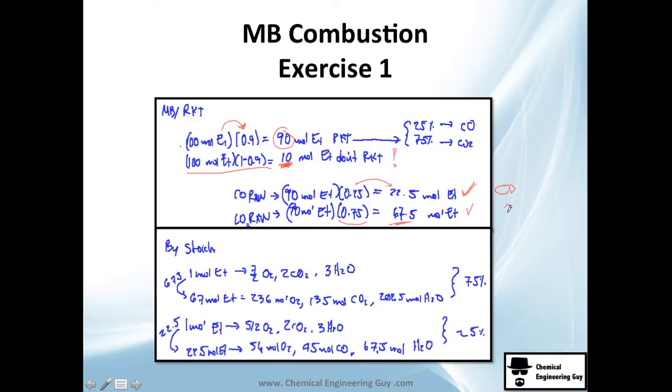By stoichiometry, one mole of ethane when combusting completely gives 7.5 moles of oxygen consumed, 2 moles of CO2, and 3 moles of H2O. Since we have 67.5 moles going to complete combustion, we multiply by 67.5 to get all the CO2 fraction, water, unreacted ethane, and oxygen consumption.